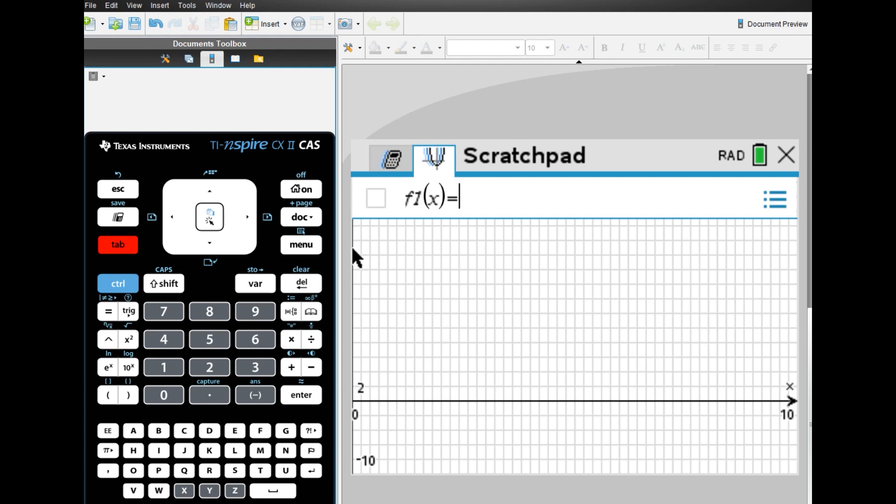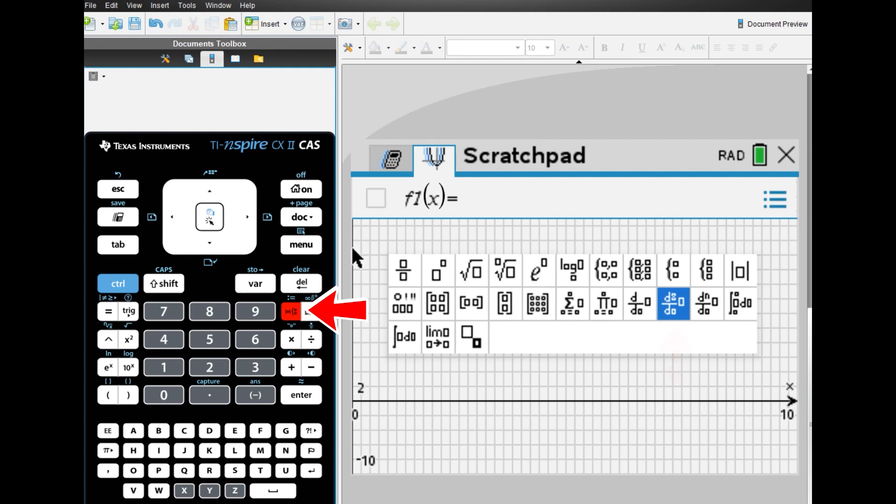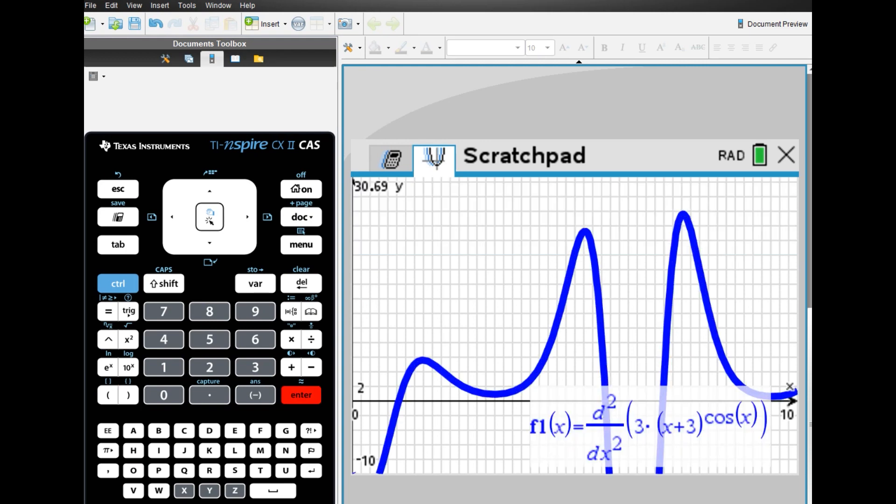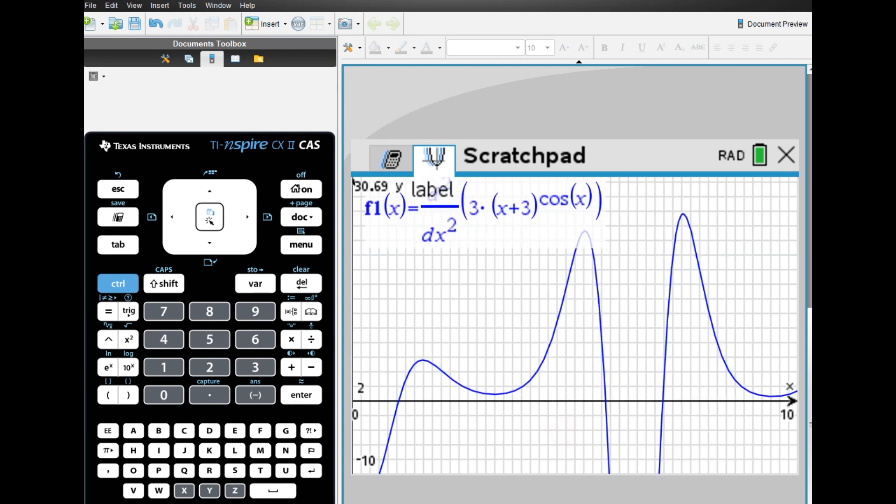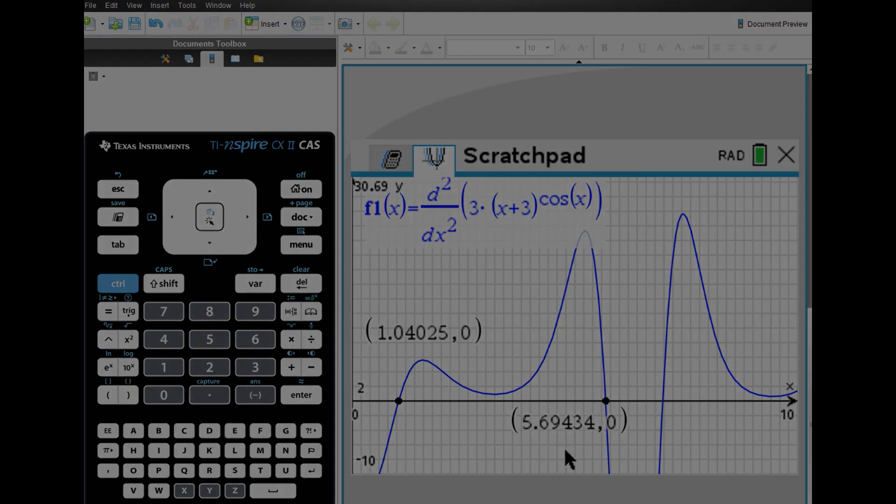Now let's draw the graph of the second derivative using the calculator. First, press the tab key to prepare to enter the equation. Then press the right button next to the number 9 and select second derivative. Now let's enter the equation. The graph of the second derivative has been drawn. By finding 0 on the calculator, we have found the value where the second derivative equals 0.